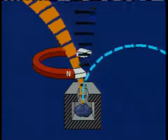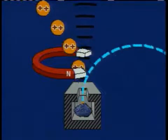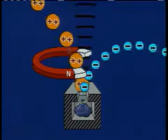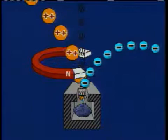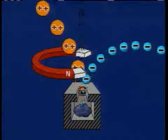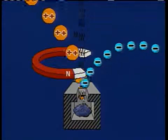Eventually, an alpha ray was identified as the nucleus of the helium atom. Beta radiation, a stream of electrons. And gamma rays were photons of electromagnetic radiation.